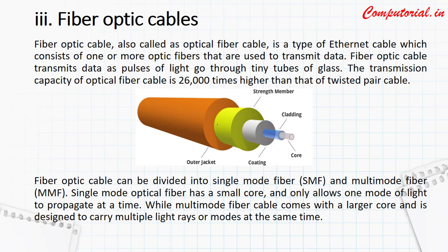Because the light principle is used, it doesn't experience any kind of electromagnetic interference. Fiber optic cables are also termed as optical fiber cables. It is a type of Ethernet cable which consists of one or more optic fibers. Let's understand the diagram — in general, we have an outer jacket on the fiber optic cable.